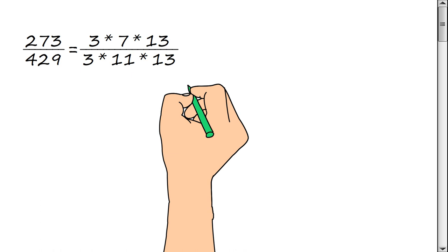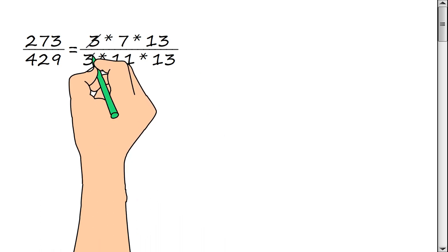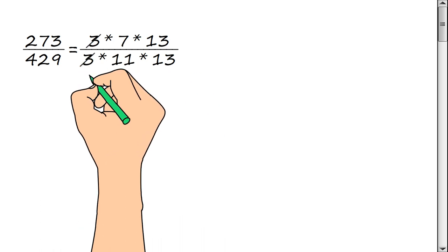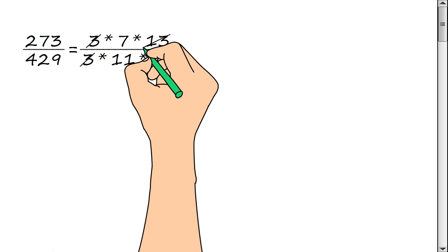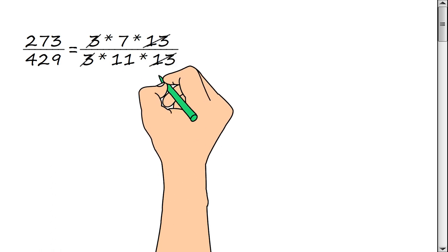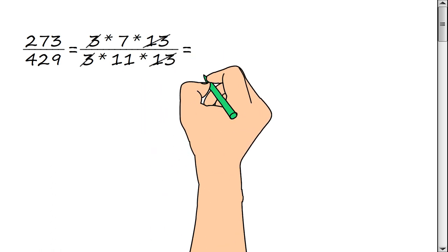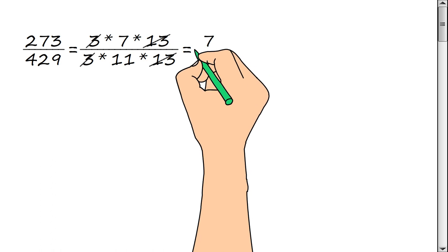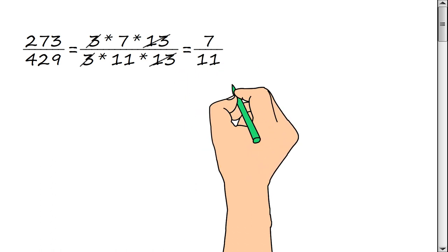Let's cancel the common factors: 3 and 3, 13 and 13. Then we get 7/11ths.